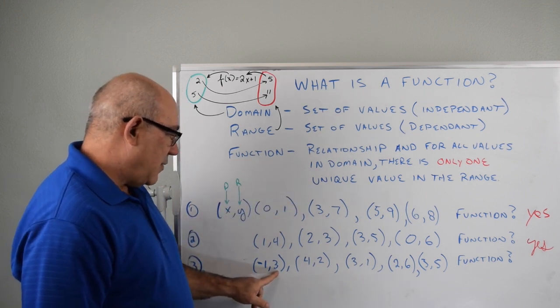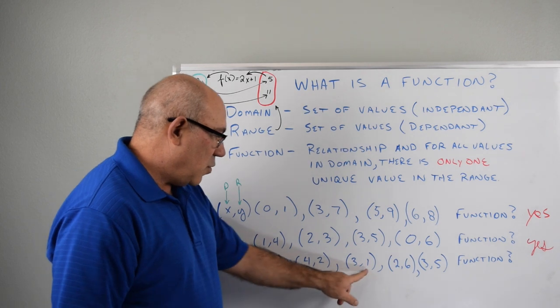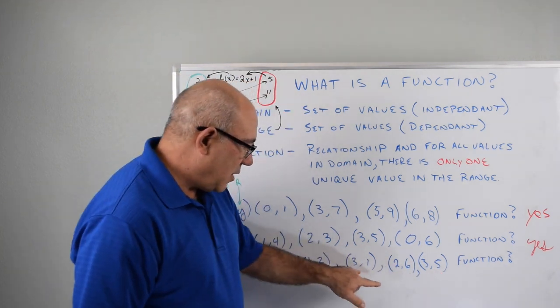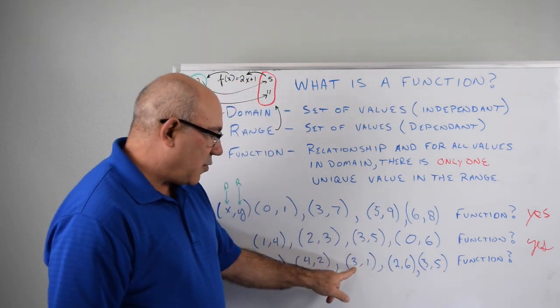So when we look here, we have three, two, one, five. So we have a three and a one, and a three and a five. So for three, when the function x is three, we get two values, two different values for the range or y.